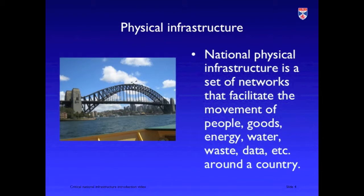We think of infrastructure at two levels really. At a physical level, we have a set of physical networks — nodes and links which are predominantly concerned with moving things: moving people, moving energy, moving data. These are things which we can see and touch; we can see bridges, we can see communication towers, we can walk along roads.